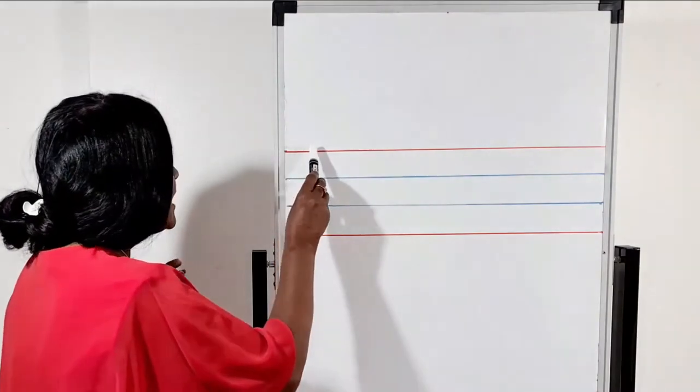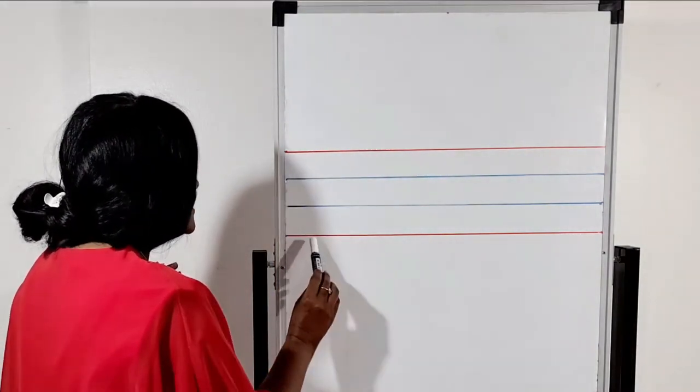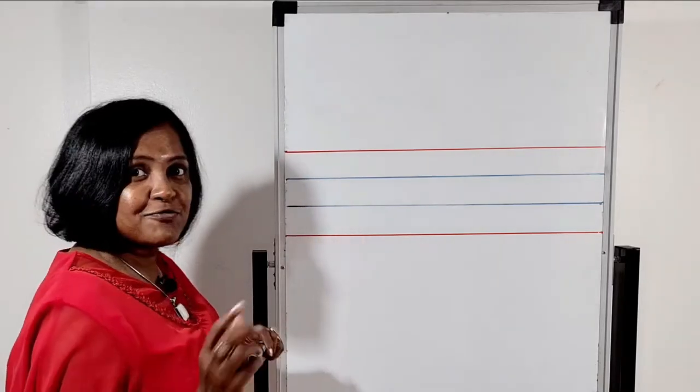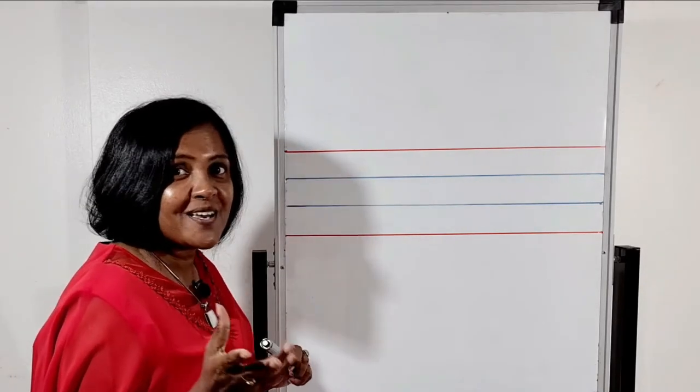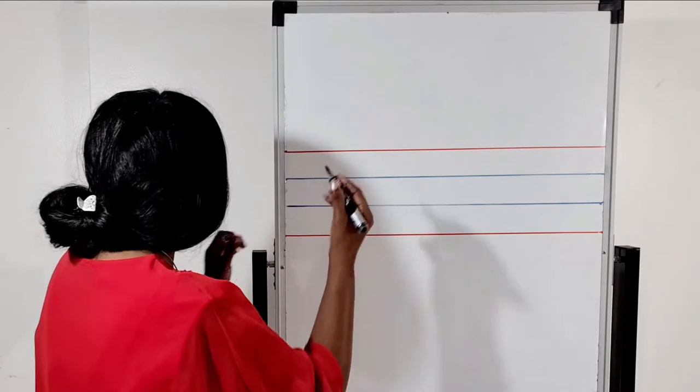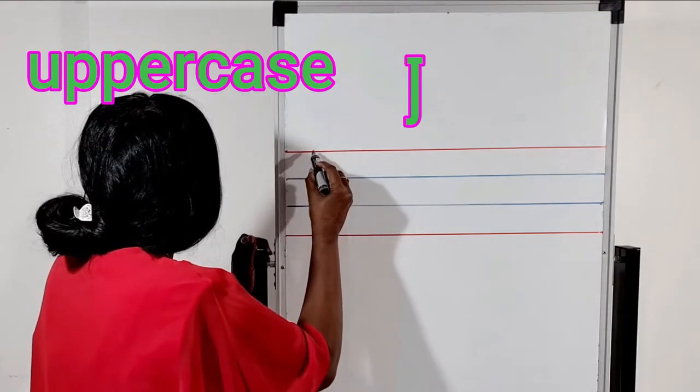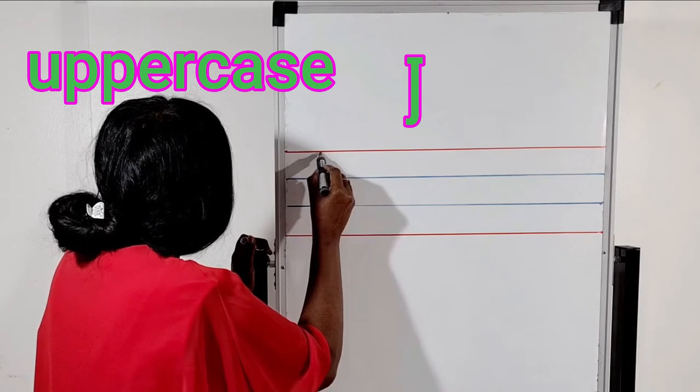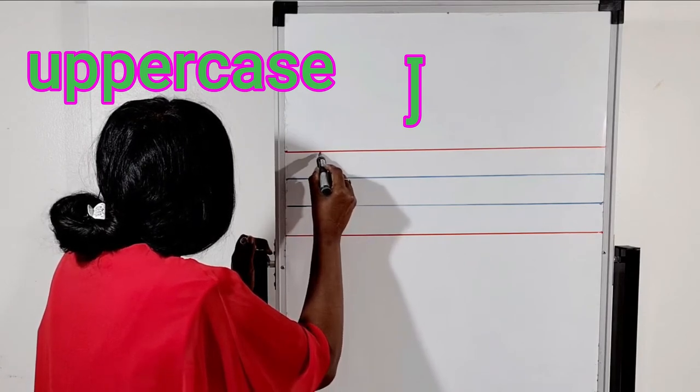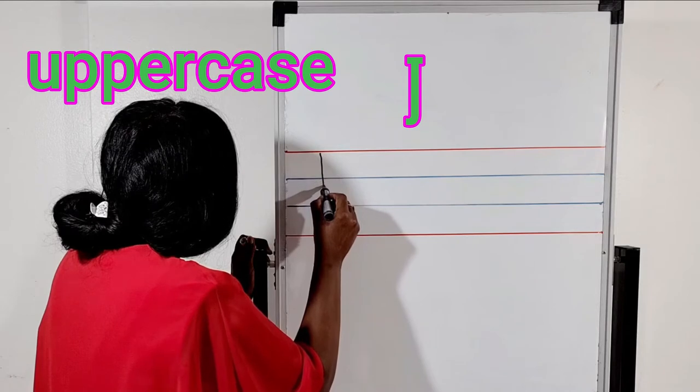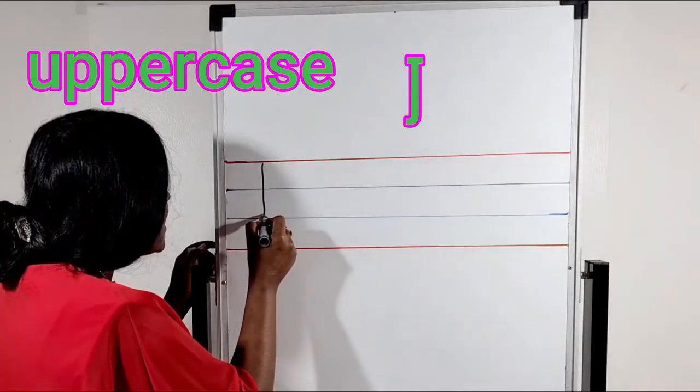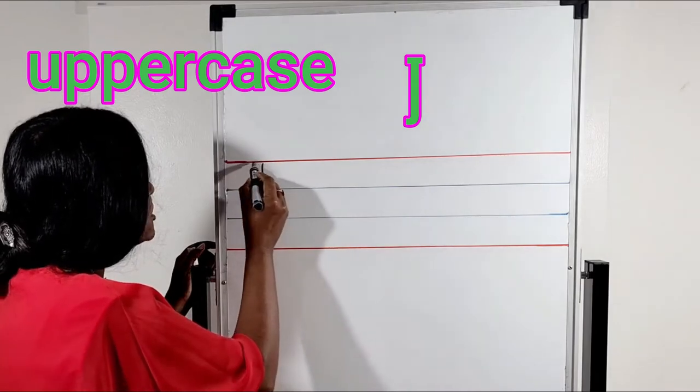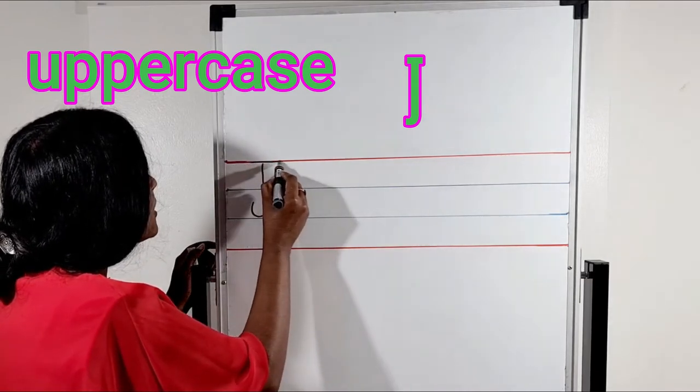You all know this is our headline and this is leg line and these are two tummy lines. First I am going to introduce uppercase J. We start from the headline. It goes down to the second tummy line. A standing line. At the end we will make a hook like this. Then go back to the top. A line across.